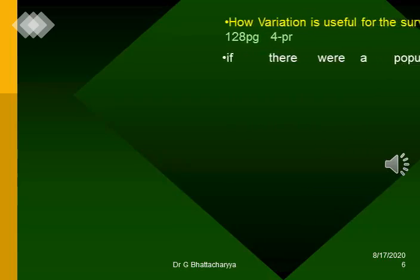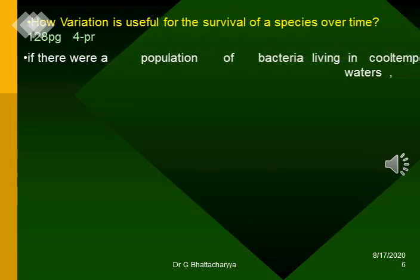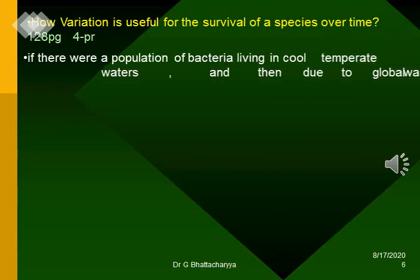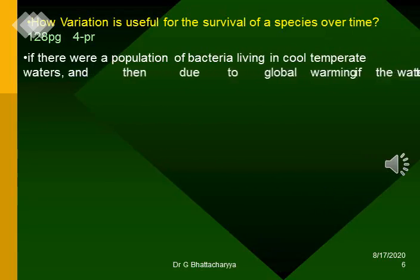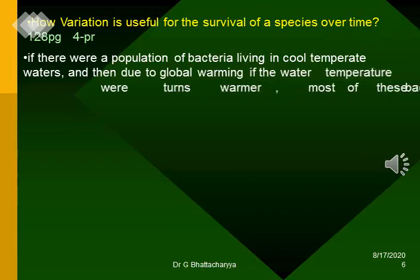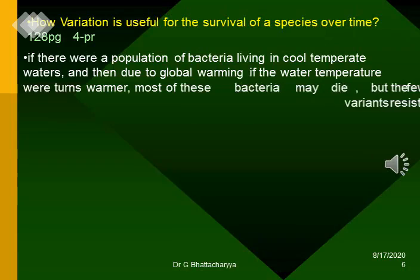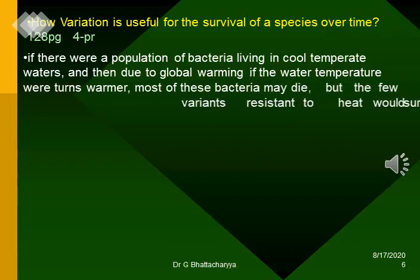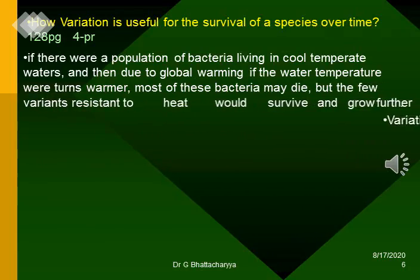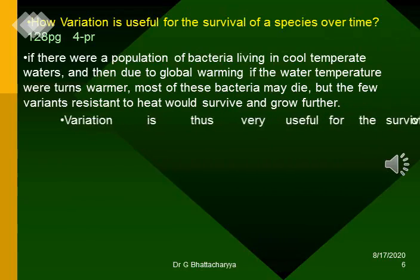How is variation useful for the survival of species over time? If there were a population of bacteria living in cool temperate waters, and then due to global warming the water temperature were to warm up, most of these bacteria may die. But the few variants resistant to heat would survive and grow further. Variation is thus very useful for the survival of species over time.